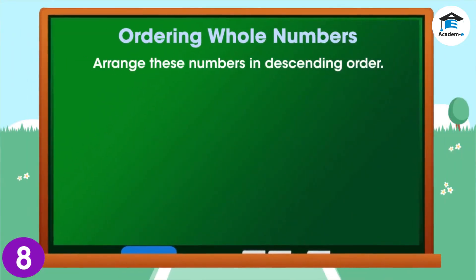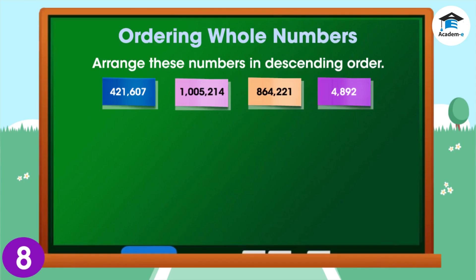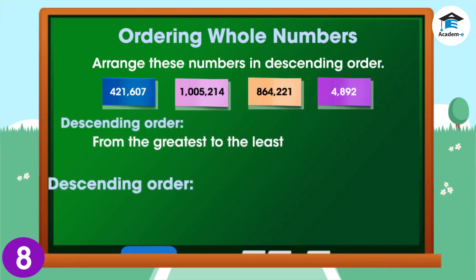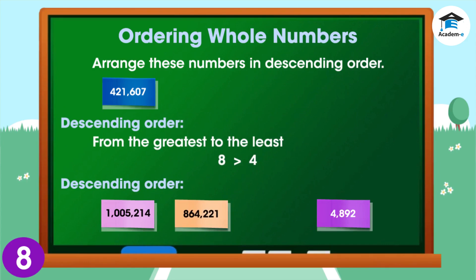Let's have another example. Arrange these numbers in descending order: 421,607; 1,005,214; 864,221; 4,892. These numbers have different numbers of digits, so it's easy to see which is the greatest and which is the lowest. These two numbers both have six digits, so you compare their leftmost digits. 8 is greater than 4, and so 864,221 is the greater number.